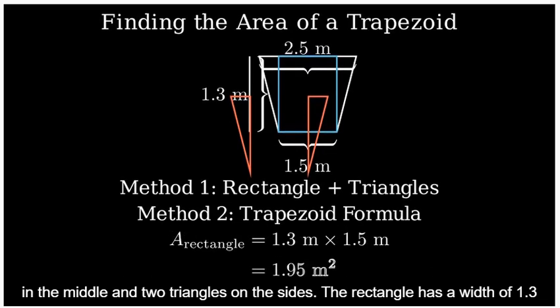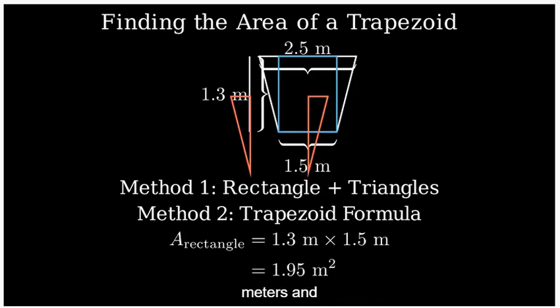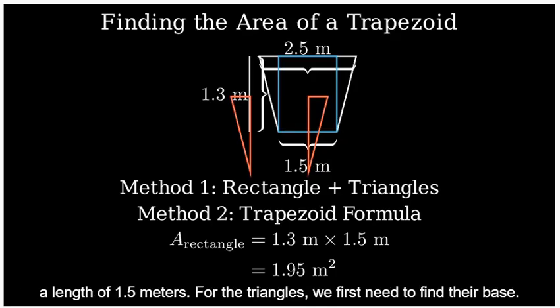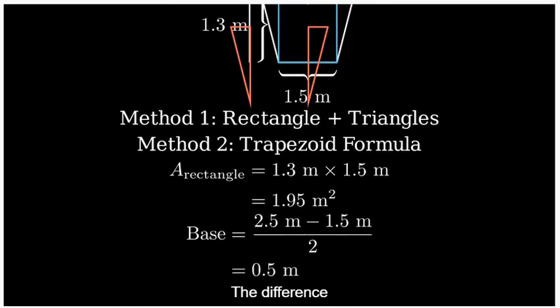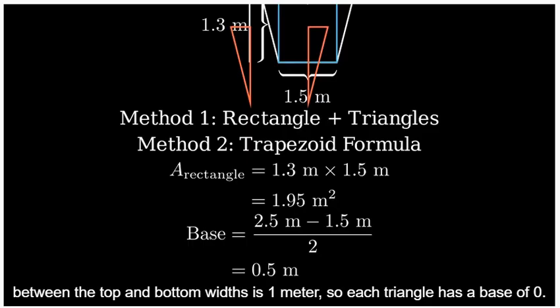The rectangle has a width of 1.3 meters and a length of 1.5 meters. For the triangles, we first need to find their base. The difference between the top and bottom widths is 1 meter.